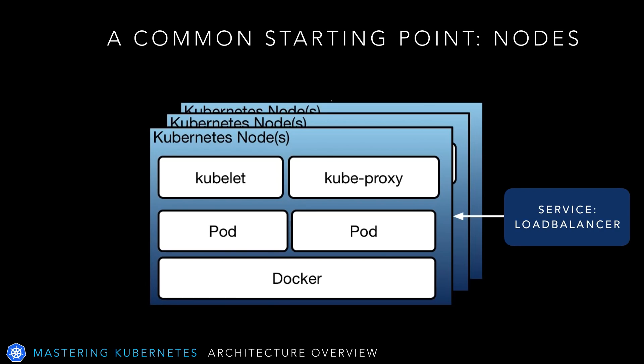Since containers and container orchestration technologies de-emphasize the role of the individual system — whether that's a server, a VM, or even a container — it can be difficult to get a starting point when exploring Kubernetes architecture. The pod and deployment are relatively important concepts from previous lectures, but let's think a little bit lower level and start with a familiar concept: the server, or the virtual machine. In traditional architectures, it was usually the center of the universe. In Kubernetes, they're still quite important. They're called nodes — they used to be called minions, so you may see that in some older documentation, but now we refer to them as nodes.